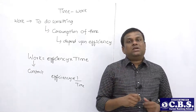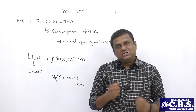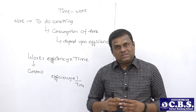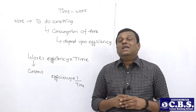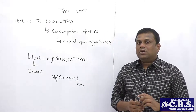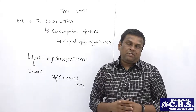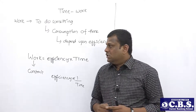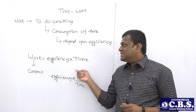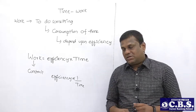All activities involve a consumption of time, so consumption of time is named as work. Work depends on consumption of time, and time depends on efficiency. If a person has high efficiency, they consume less time to finish a particular work. If a person has less efficiency, they take more time to finish a particular work. So basically, work depends on two parameters: time and efficiency. The major parameter of work is efficiency. Therefore, work is equal to the product of efficiency and time.